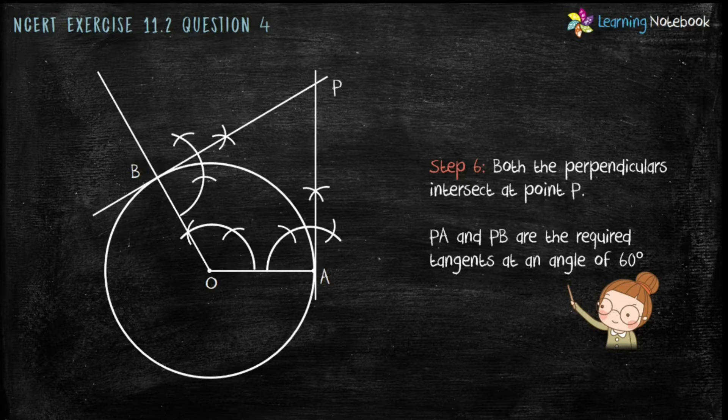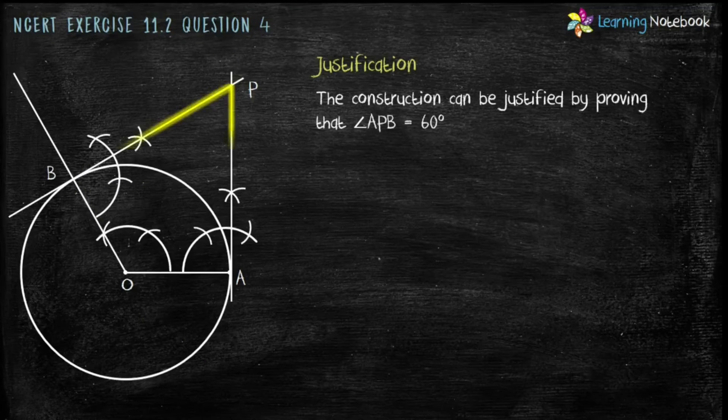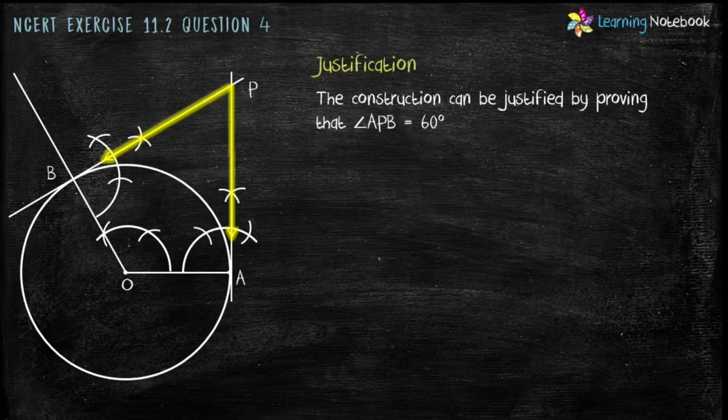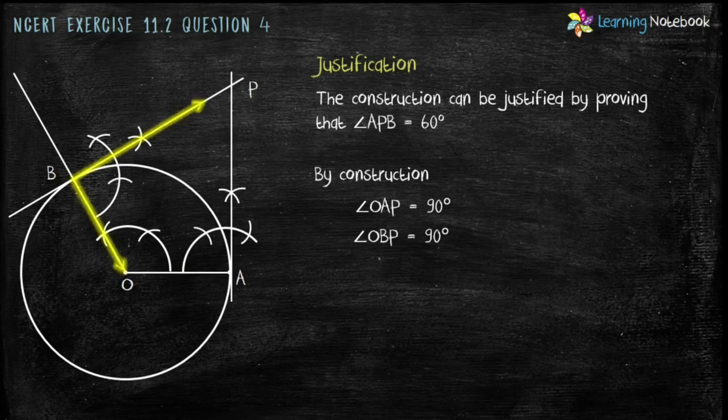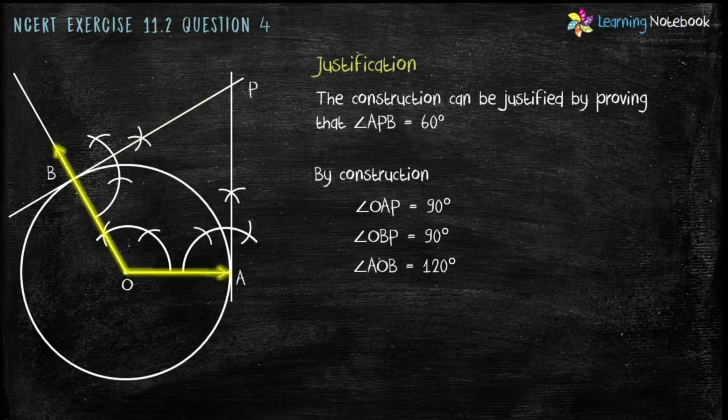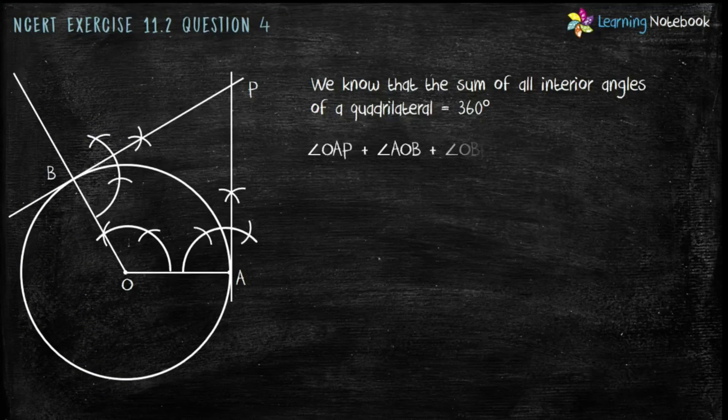Now, students, we will justify our construction. We know that sum of all interior angles of a quadrilateral is 360 degrees. So, the sum of these 4 angles equals to 360 degrees.